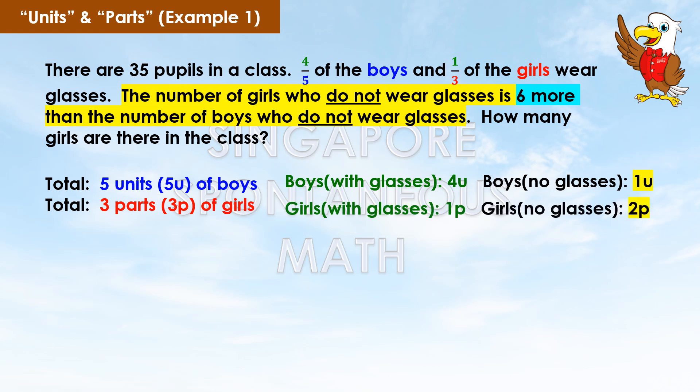Of the three parts of girls, one part of them wear glasses. Hence, the number of girls who do not wear glasses is two parts. Three minus one equals two.